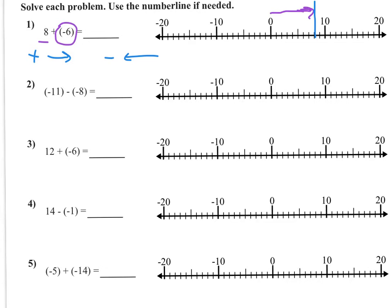For that negative number, I'm going to start at the positive 8 now and move left 6: 1, 2, 3, 4, 5, 6. You can see when you do that, you end up at positive 2.